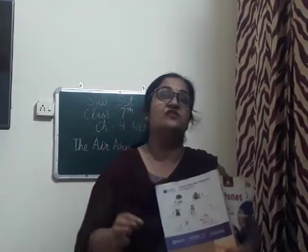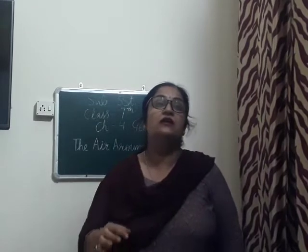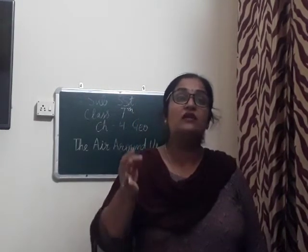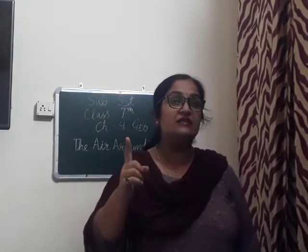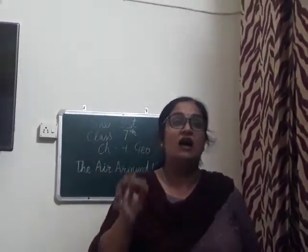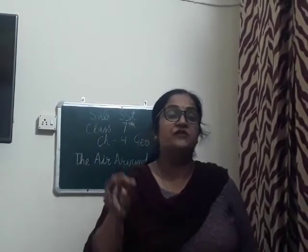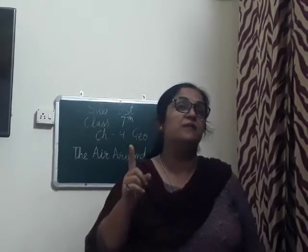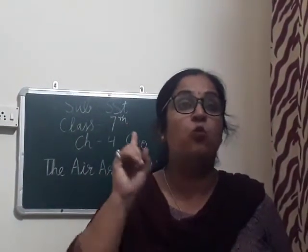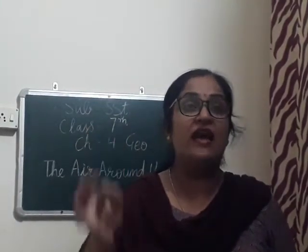Now about the composition of the atmosphere. The atmosphere is composed of three things. Number one: gases. Nitrogen and oxygen are the two main gases of the atmosphere. They constitute 99% of the atmosphere. The remaining 1% is represented by argon, carbon dioxide, neon, helium, ozone, hydrogen, krypton, xenon, methane, etc.